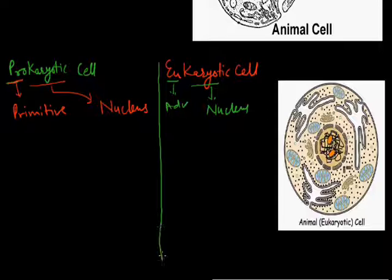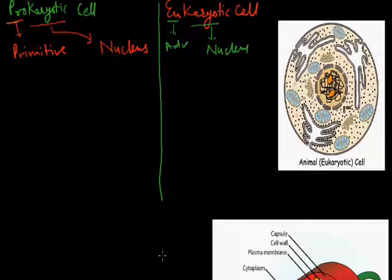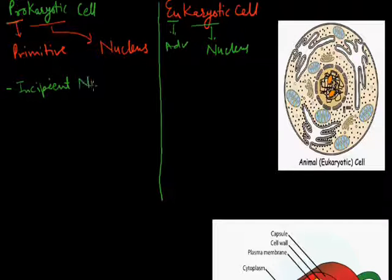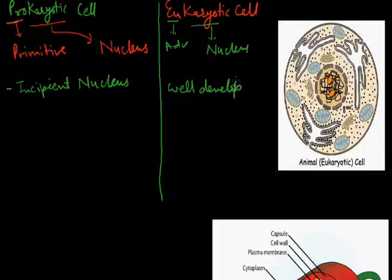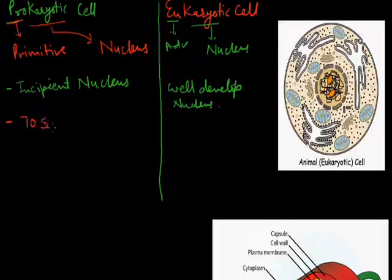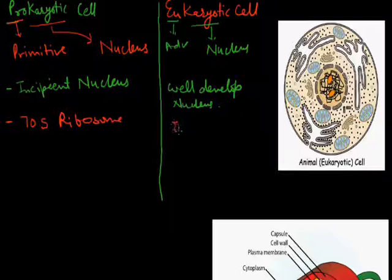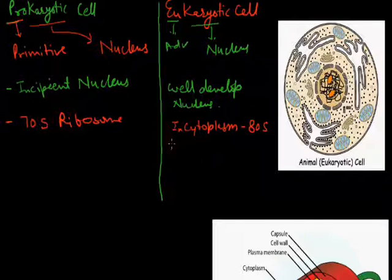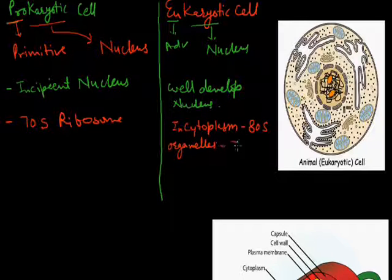The basic differences between prokaryotic and eukaryotic cells: First, prokaryotic cells have a primitive or incipient nucleus, while eukaryotic cells have a well-developed nucleus. Second, prokaryotic cells have only 70S ribosomes, while eukaryotic cells have 80S ribosomes in the cytoplasm and 70S ribosomes in organelles like mitochondria and chloroplasts.